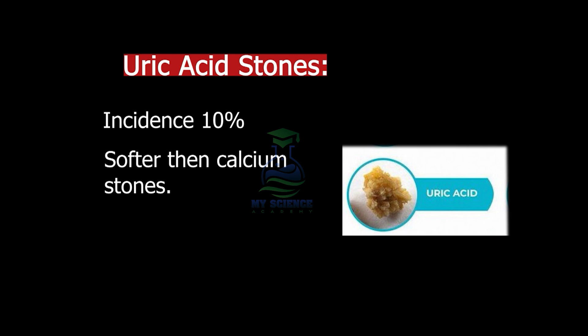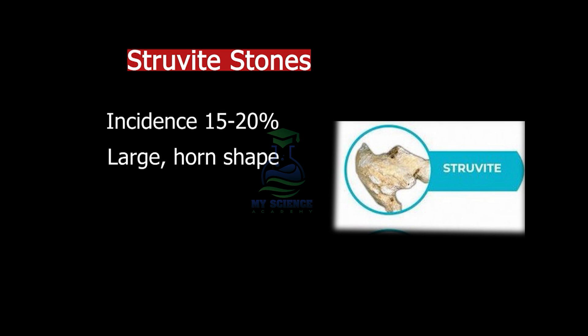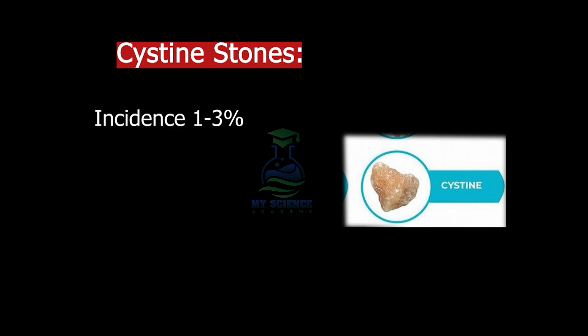Uric acid stones are softer than calcium stones, light brown in color, and round in shape. Struvite stones have an incidence of 15 to 20%; they are large and horn-shaped with branches. These are found because of infection.